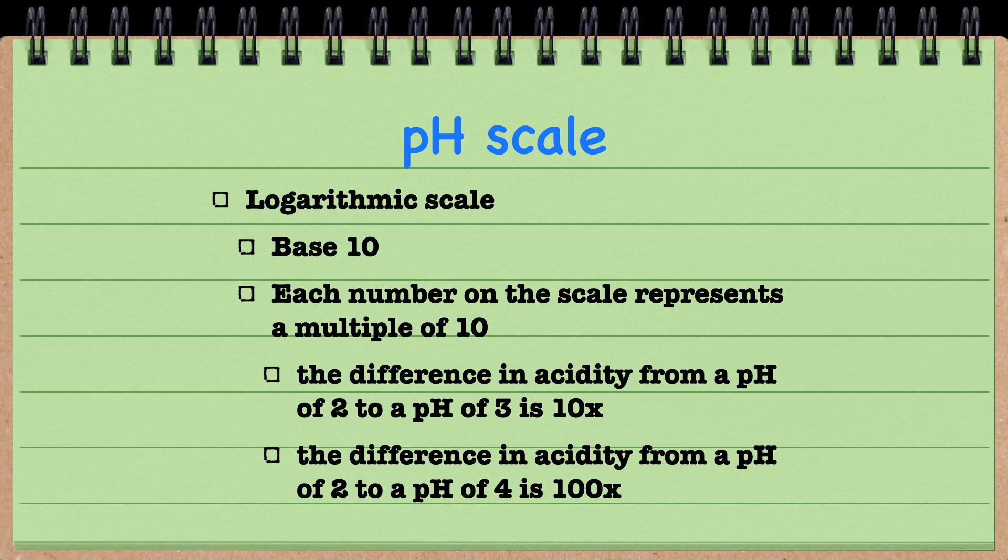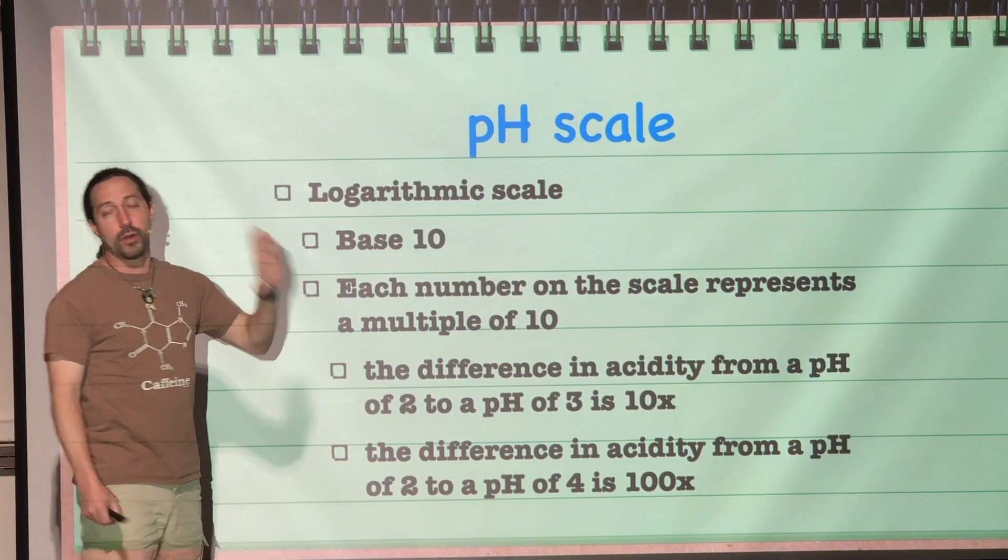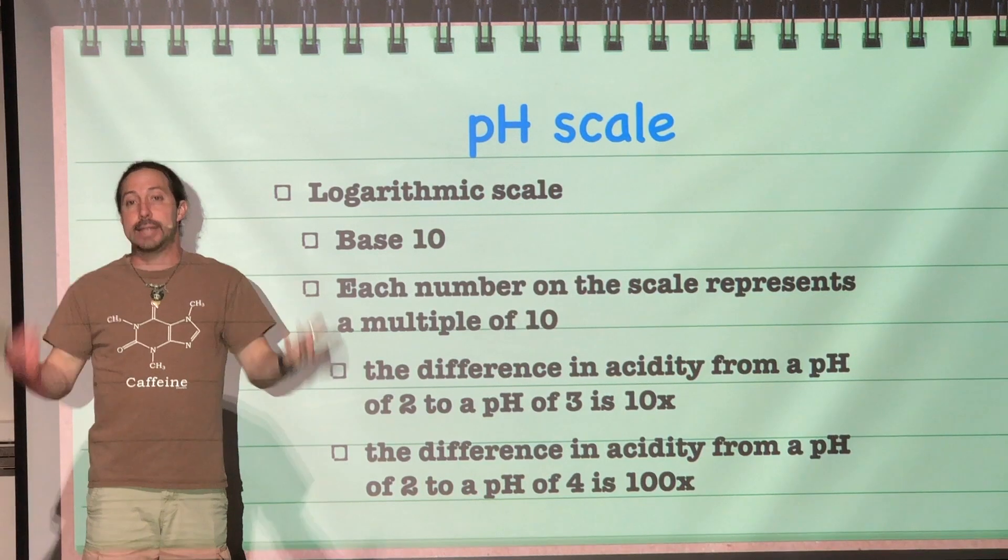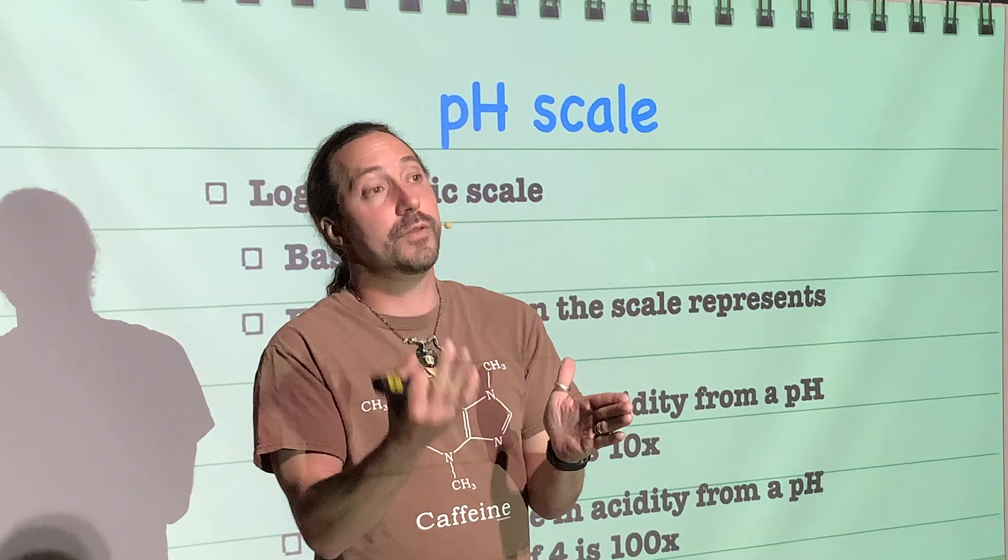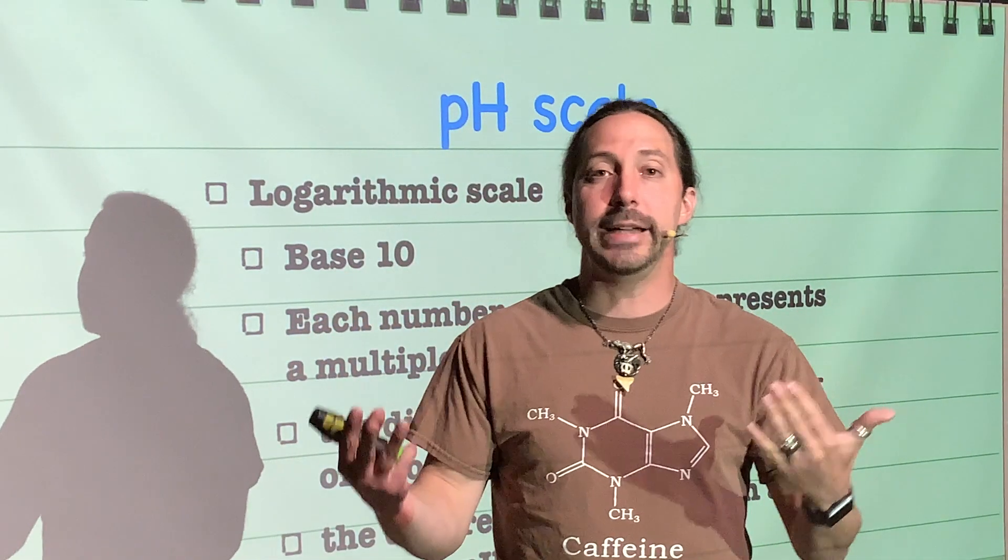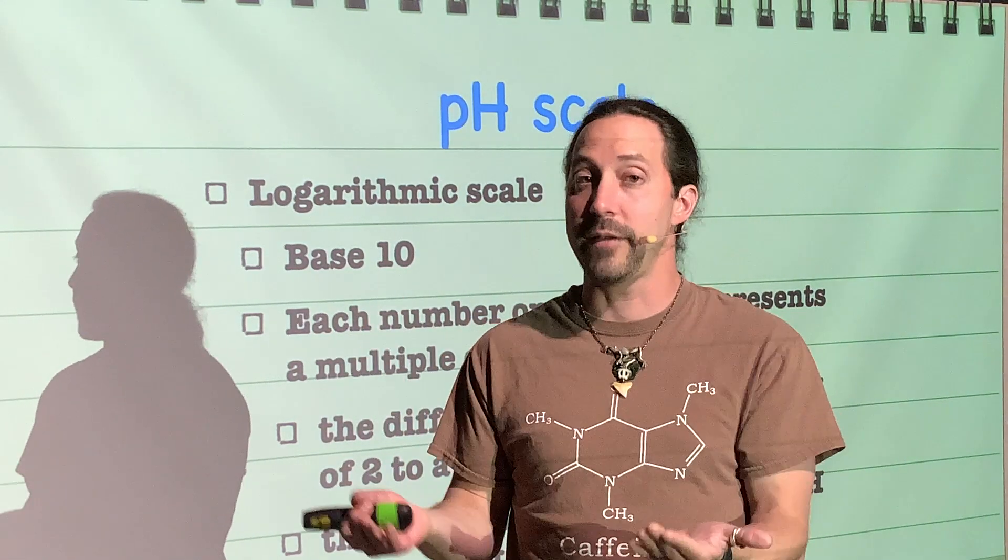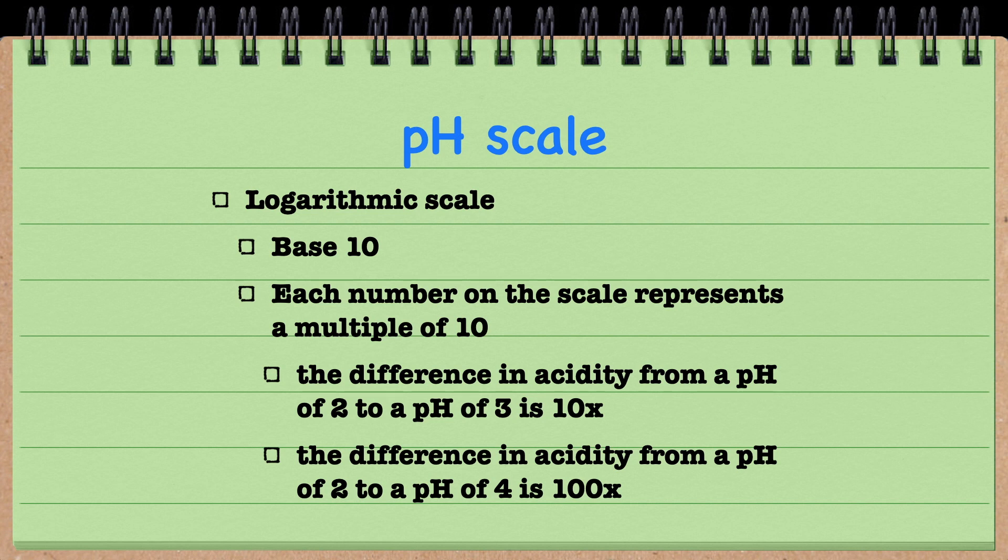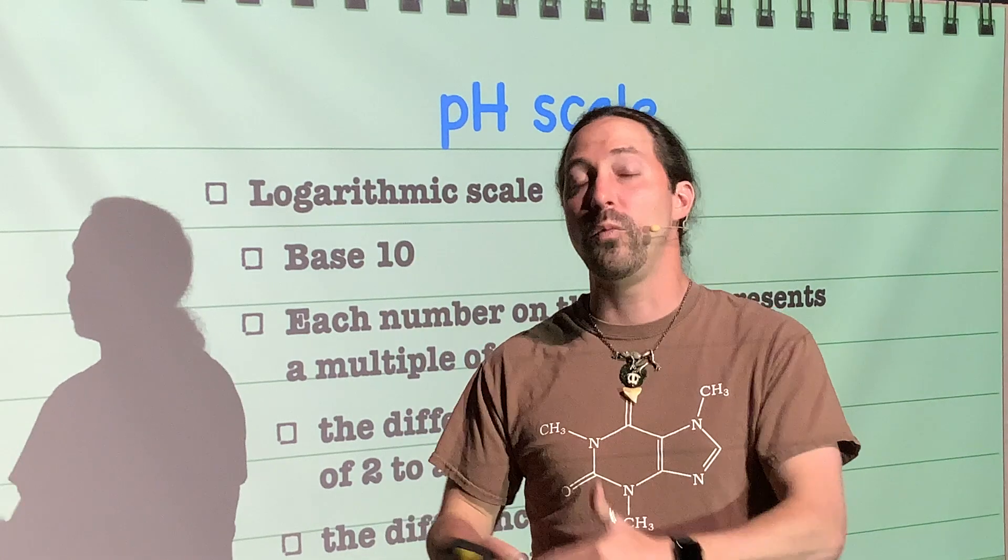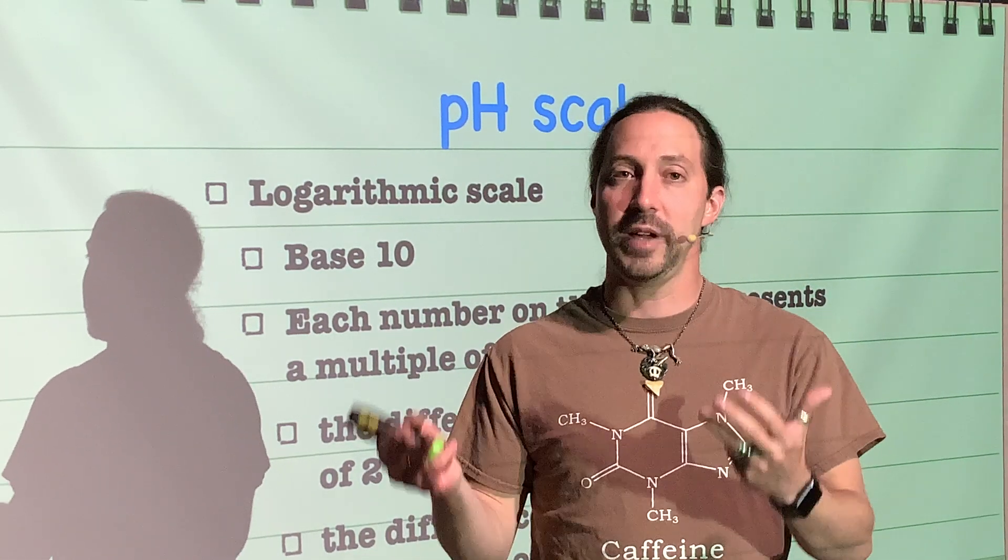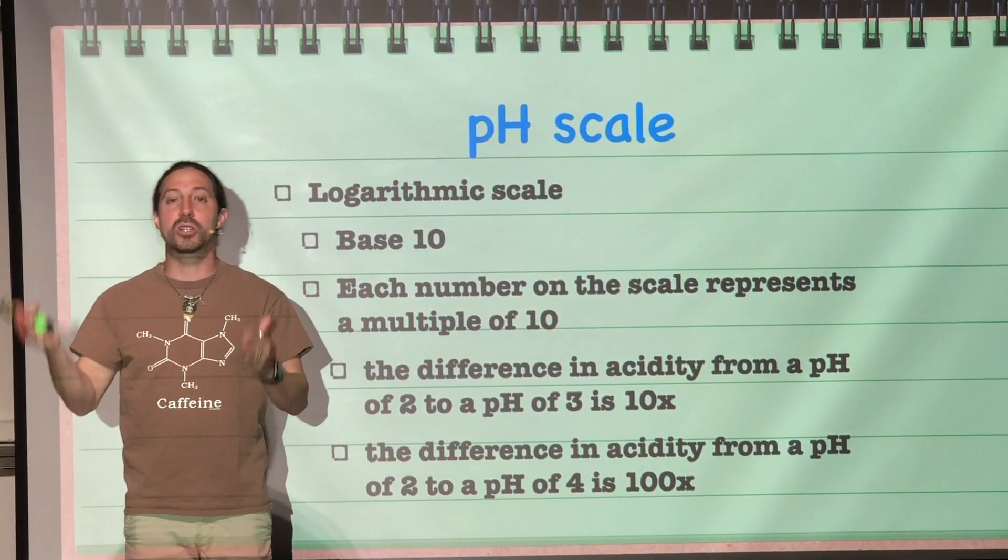But the pH scale is not just a simple scale. It is a logarithmic scale. It means that the difference between each of our measurements, or each of our values, is actually a base 10. This means that the pH of 1 is 10 times more acidic than a pH of 2. And a pH of 8 is 10 times more basic than a pH of 7. And a pH of 9 is 10 times more basic than a pH of 8 is. A pH of 10 is 100 times more basic than a pH of 8. And a pH of 11 would be a thousand times more basic than a pH of 8.